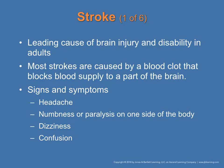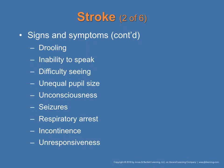Stroke is the leading cause of brain injury and disability in adults. Most strokes are caused by a blood clot that blocks blood flow to one part of the brain. Symptoms include headache, numbness, paralysis, weakness, dizziness, confusion, drooling, inability to speak, difficulty seeing, unequal pupil size, unconsciousness, seizures, respiratory arrest, incontinence, unresponsiveness, and difficulty walking.